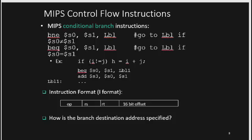Branch instructions correspond to the conditionals we have in C or Java code — whenever we have operator-based conditionals such as if i not equals j, if i equals j, if i less than j, or if i greater than j, we use branch instructions.